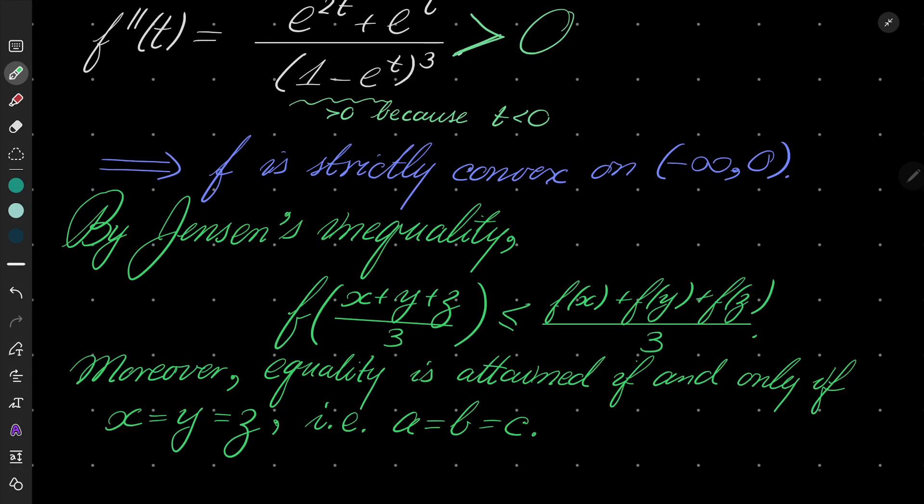So now we know that our inequality is in fact true. And moreover, equality can happen if and only if a equals b equals c. And that concludes our proof.